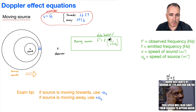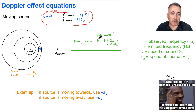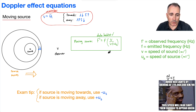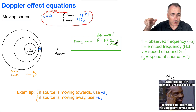I like to think it through rather than memorize the sign. If the source is coming towards you, the frequency should be higher — like a car with a higher pitch as it approaches. If I want F-prime to be larger, I want to divide by a smaller number, so I use minus U-S. If the source is moving away, I want F-prime to be smaller, so I divide by a bigger number and use plus U-S. Just use some logic — you don't really have to memorize this piece.